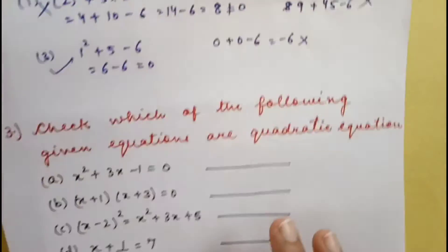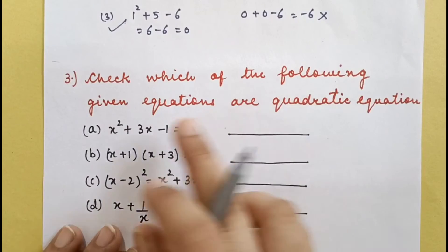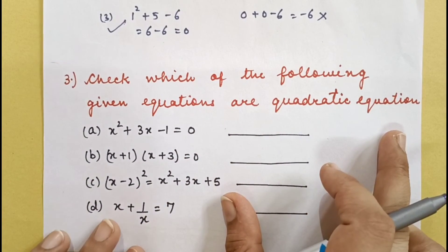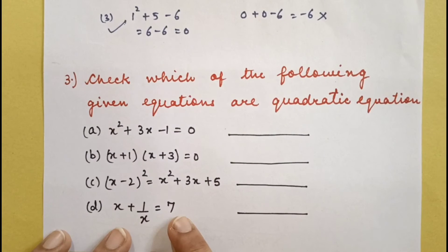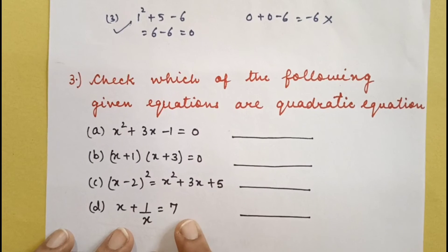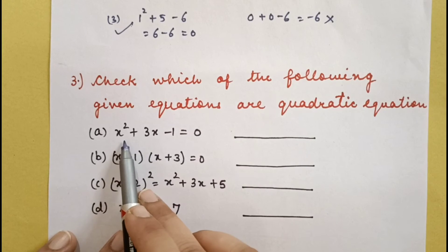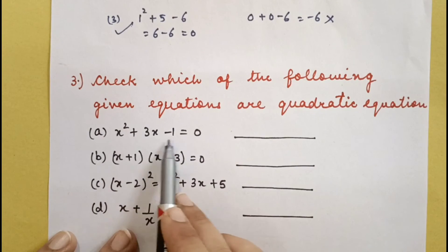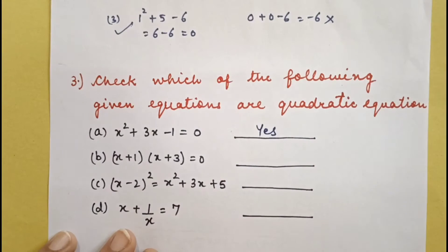Come to question number 3: Which of the following given equations are quadratic equations? We have to check which ones are quadratic — meaning the maximum power of x must be 2. In the first case, x² is present, so yes, this is a quadratic equation.